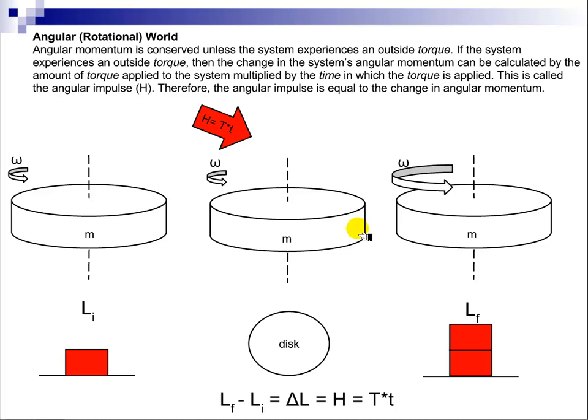So let's say we've got this disk. It's got a particular mass and rotational inertia, so it's spinning around with a certain angular velocity. Then we add an outside torque,